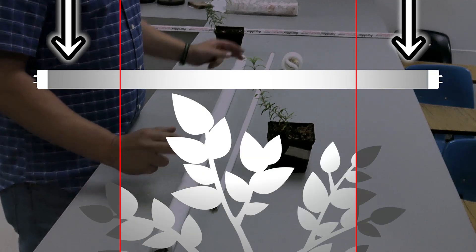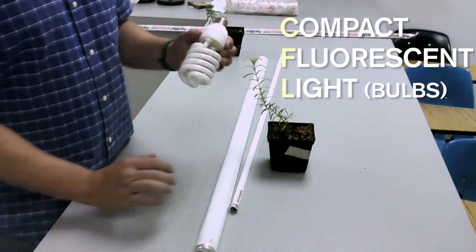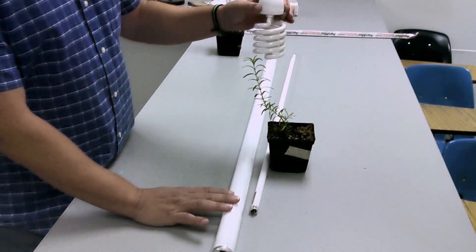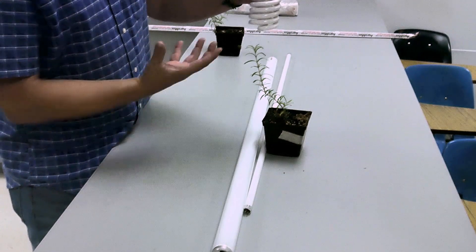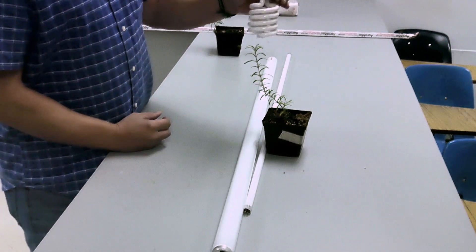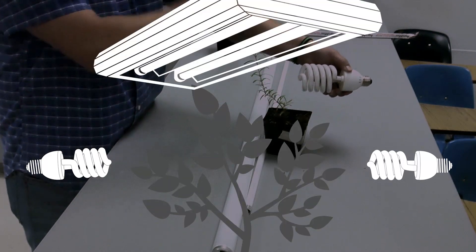Now another option with fluorescents are these compact fluorescent bulbs. You can put this above your plants. Now again, since fluorescents don't have a lot of light intensity, sometimes you can also use these for side lighting. Put this beside your plant so you'll get light from the top as well as the side.